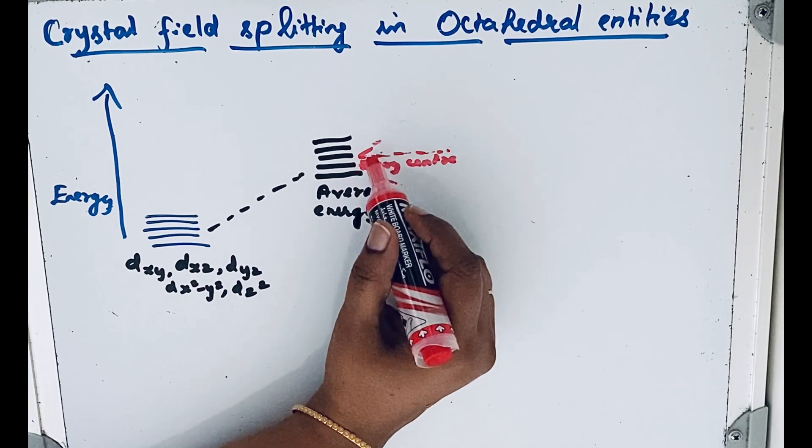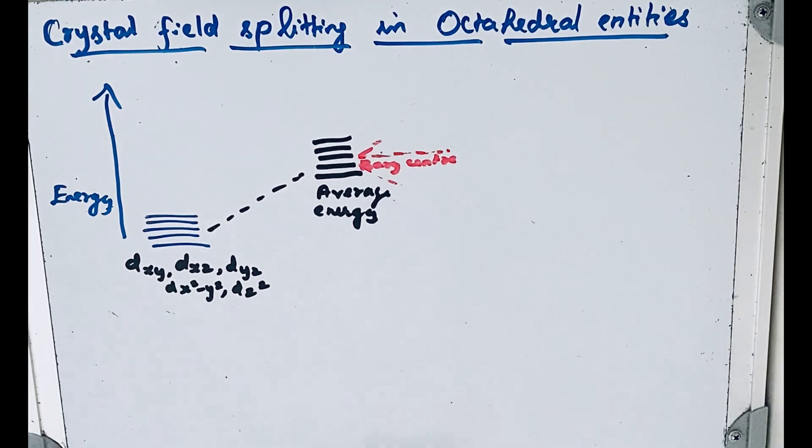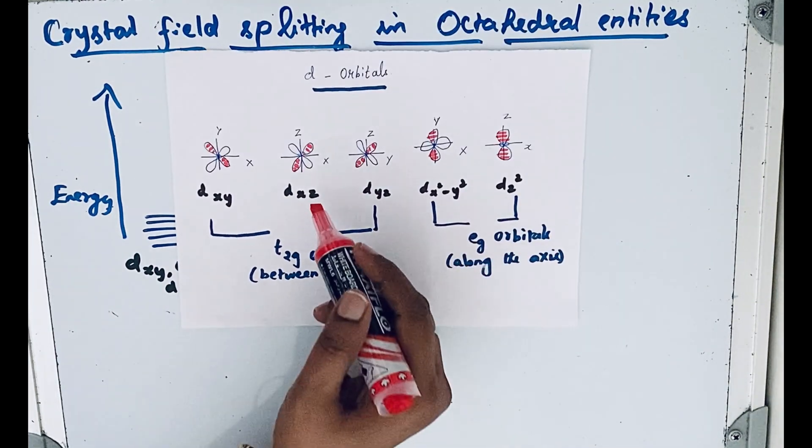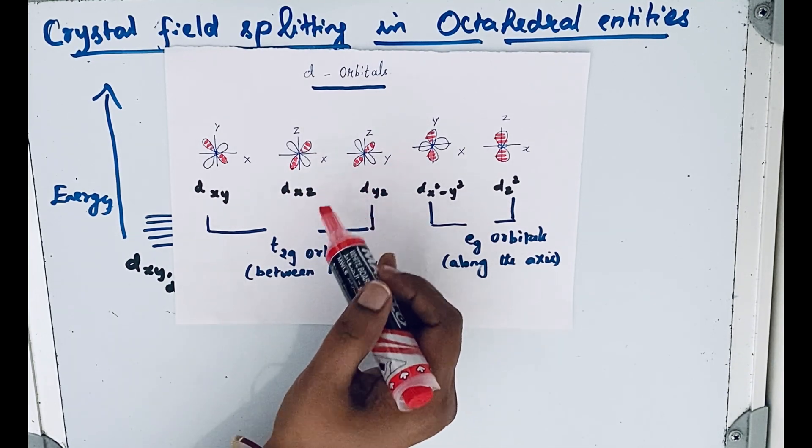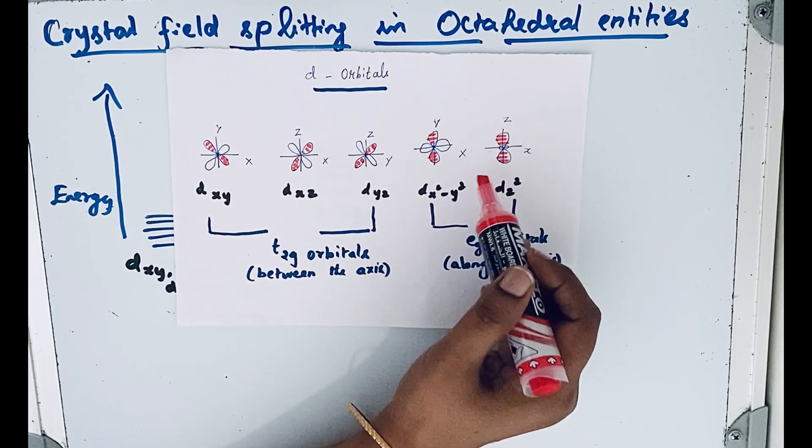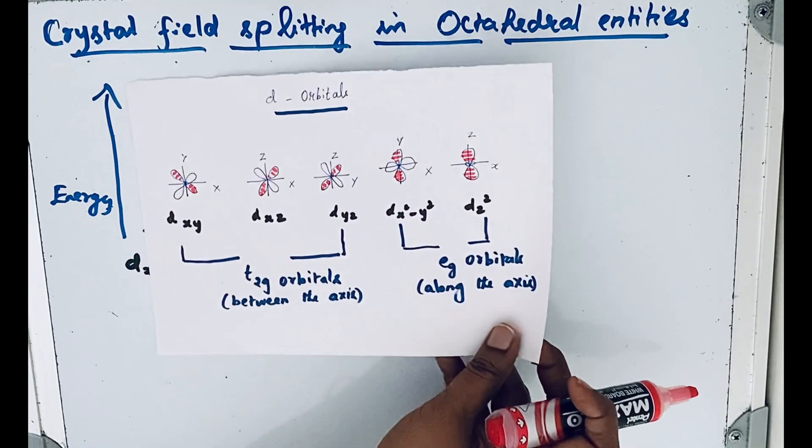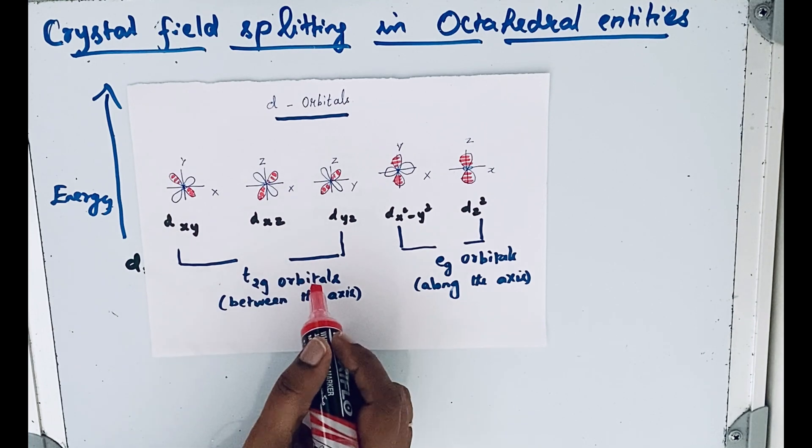Due to repulsion, we get two sets of orbitals. Which one gets higher energy and which one gets lower energy? You should know that these three orbitals lie between the axes, so the energy is less. But these two orbitals lie along the axes, so the repulsion is more. Due to that, the t2g orbitals are triply degenerate orbitals.